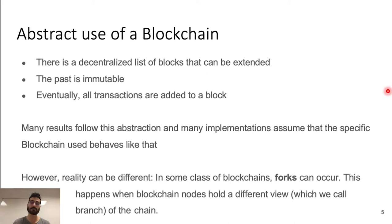Forks happen when blockchain nodes hold a different view. All these different views are called branches.